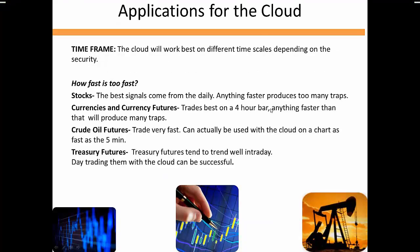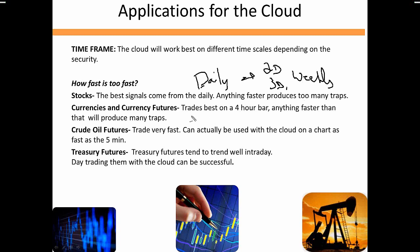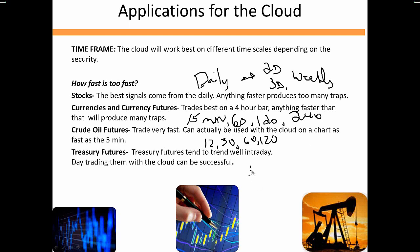These are the different time frames you should use. For stocks: daily chart breakout combined with two-day, three-day, and weekly. For currencies or currency pairs: 15-minute bar breakout with 60, 120, and 240. For oil futures day trading: 12, 30, 60, 120. For treasuries: 12, 30, 60, and 120.